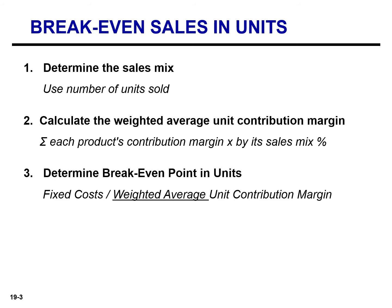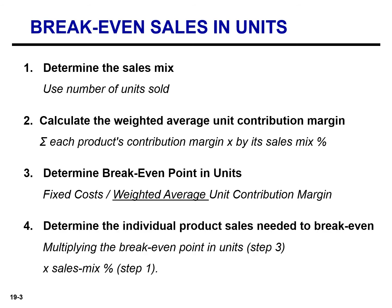The next step is to determine the break-even point in units by dividing the weighted average unit contribution margin by fixed costs. The last step is to determine the individual product sales needed to break even: take the break-even point in units calculated in step three and multiply by the sales mix percentage determined in step one to find how much of each product needs to be sold to break even.